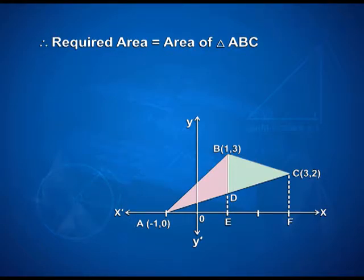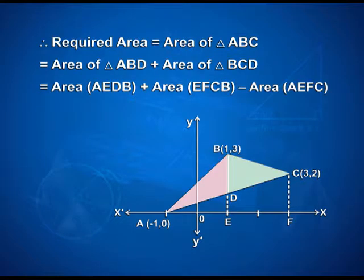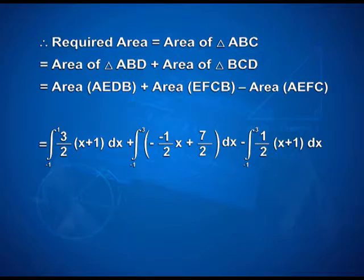Therefore, the required area equals the area of triangle ABC, obtained by calculating the area of triangle ABD plus the area of triangle BCD. This equals the area of region AEDB plus area of EFCB minus area of AEFC, which is calculated as: integral from -1 to 1 of (3/2)(x+1) dx, plus integral from 1 to 3 of (-x/2 + 7/2) dx, minus integral from -1 to 3 of (1/2)(x+1) dx.